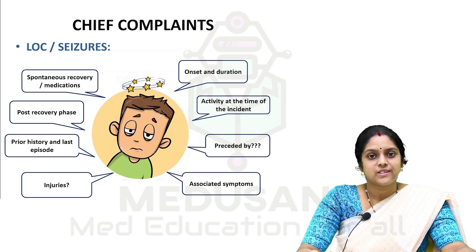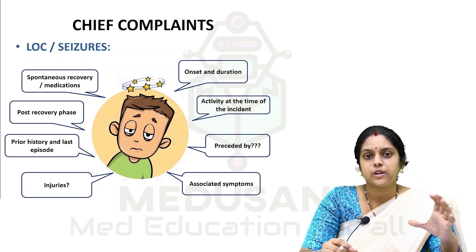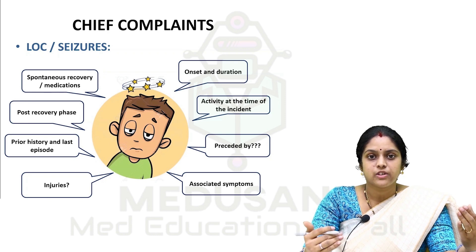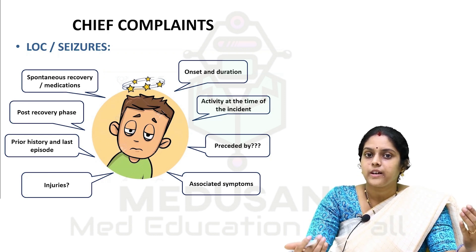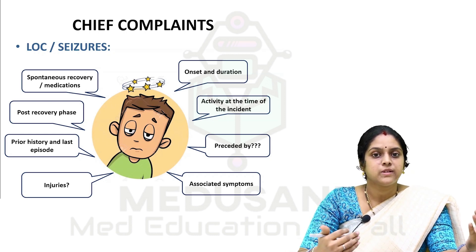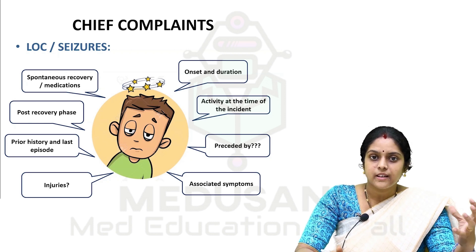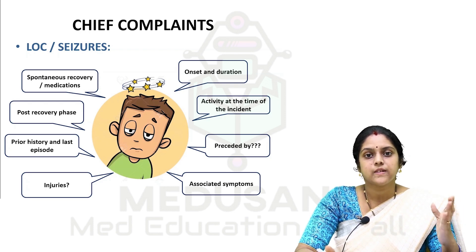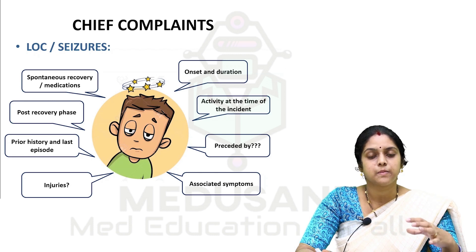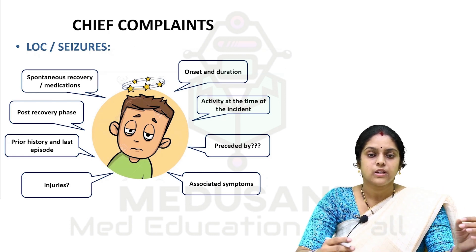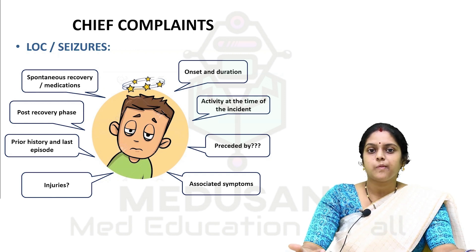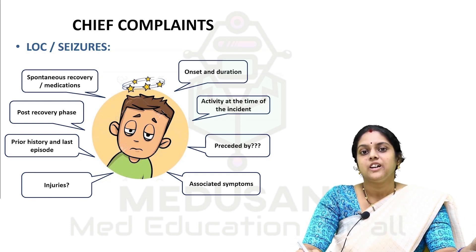Moving on to chief complaints — in CNS examination we should have a specific order in which we ask questions. We start first with complaints involving higher mental functions, then move on to cranial nerves, then the motor system, sensory system, autonomic system, cerebellar symptoms, and extrapyramidal symptoms. When we think about higher mental functions, the first thing that comes to mind is consciousness.